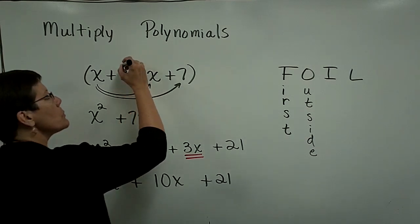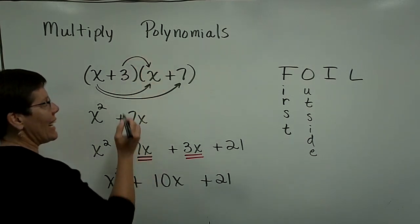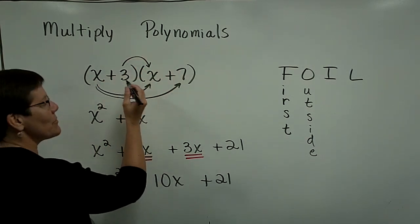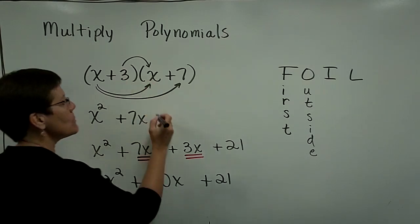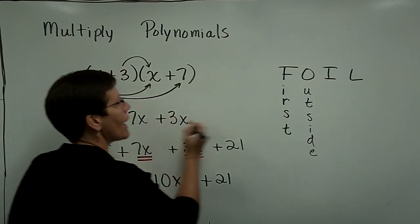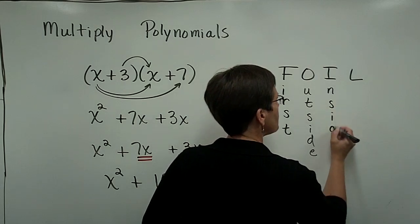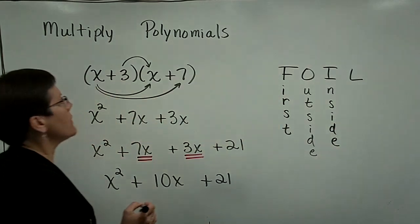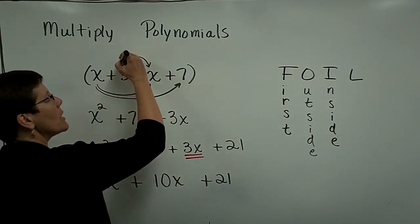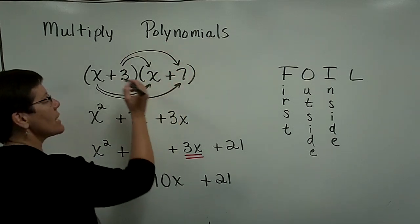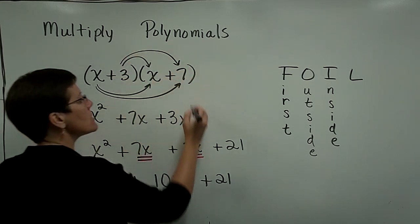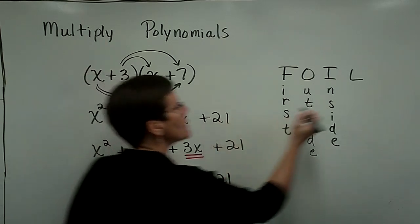Next, you multiply what they call the inside of all this mess. The inside, 3 times x is 3x. So the inside terms. And then the L in FOIL stands for multiplying the last terms together. A positive 3 times a positive 7 is a positive 21.